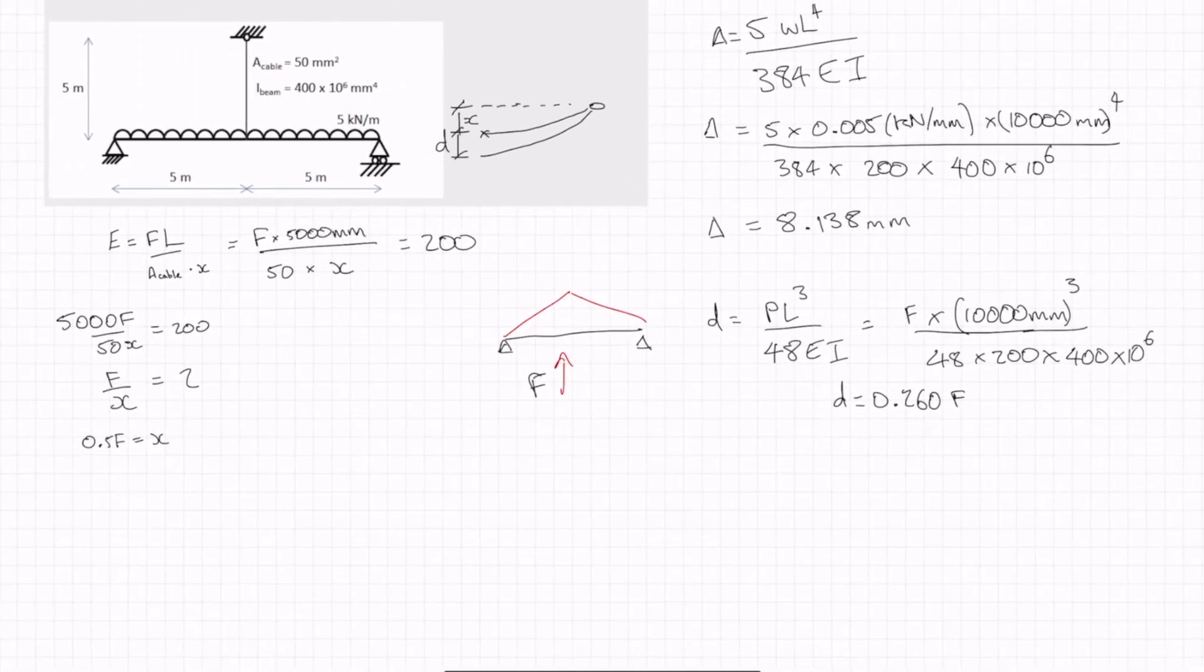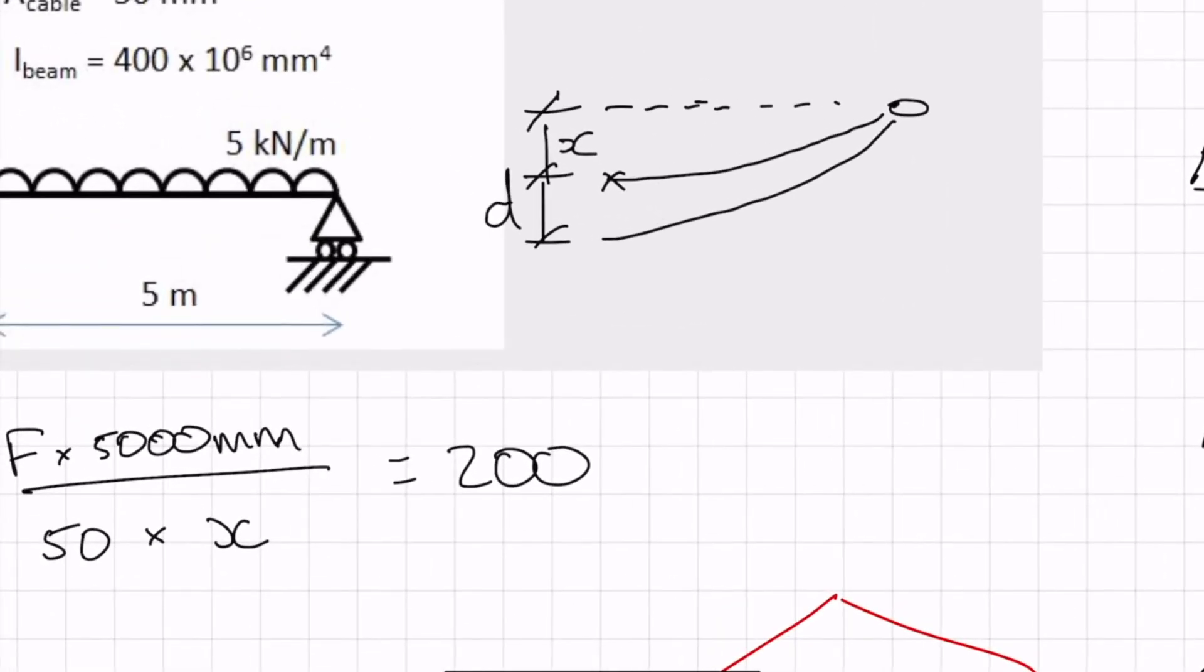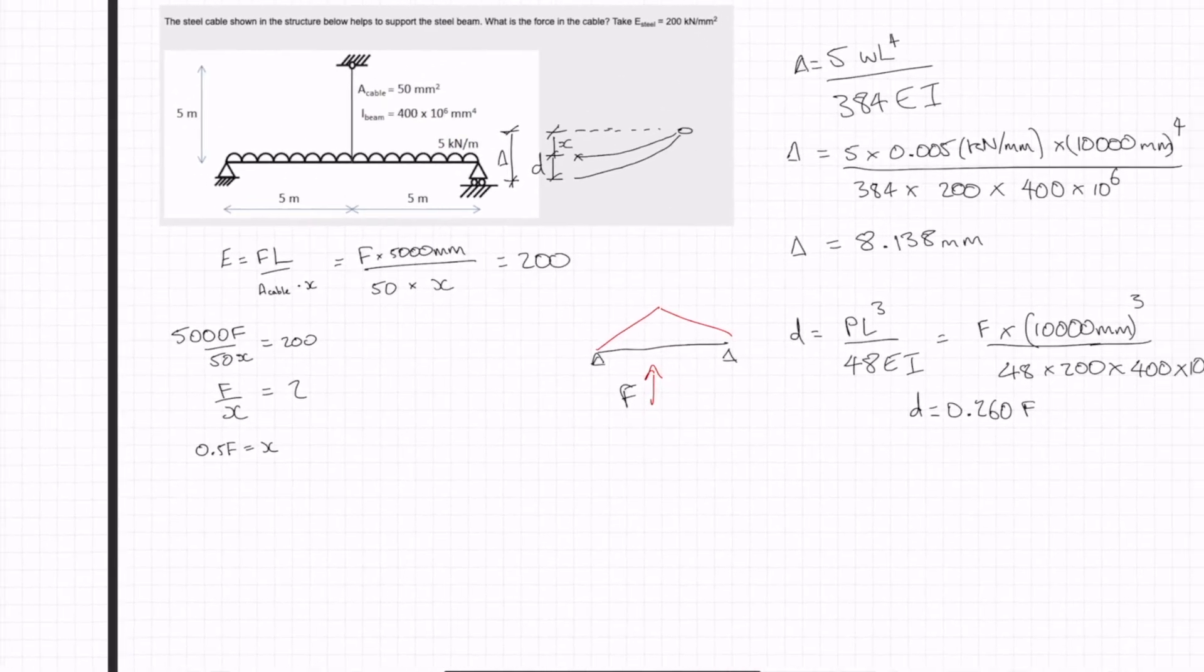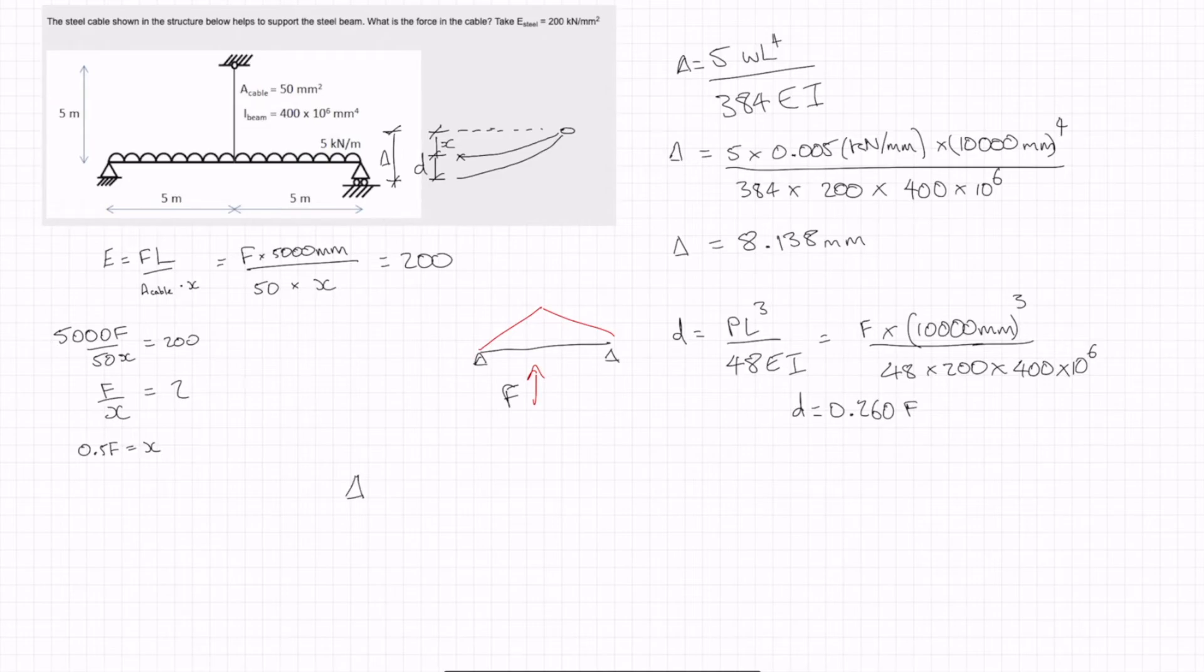Which means, and delta is our total deflection there. So we have delta minus D is equal to x.